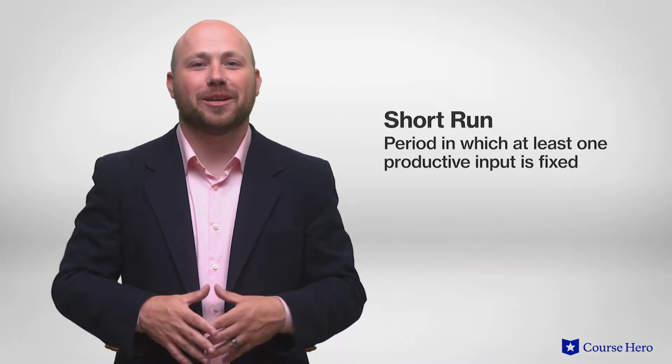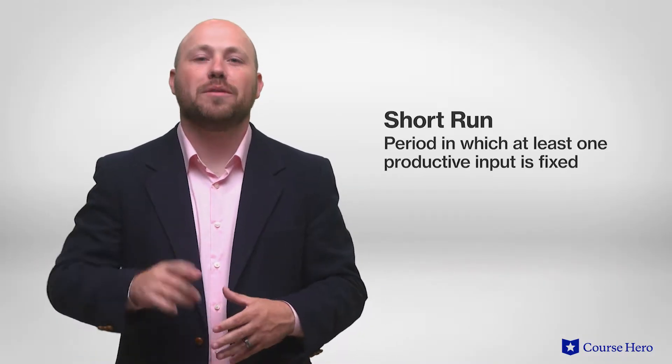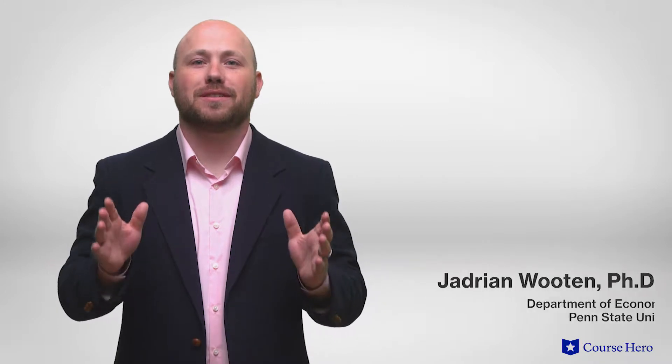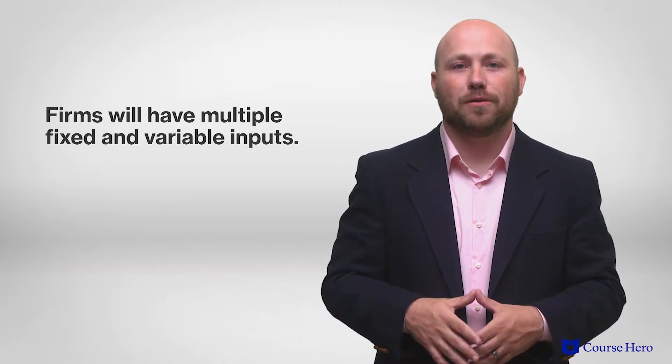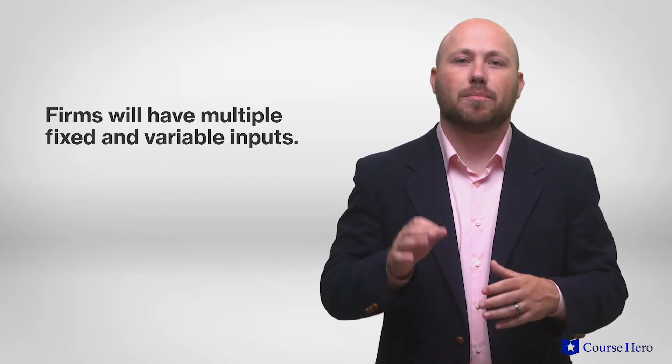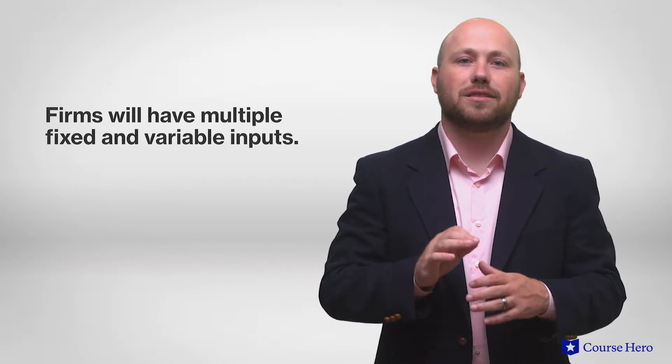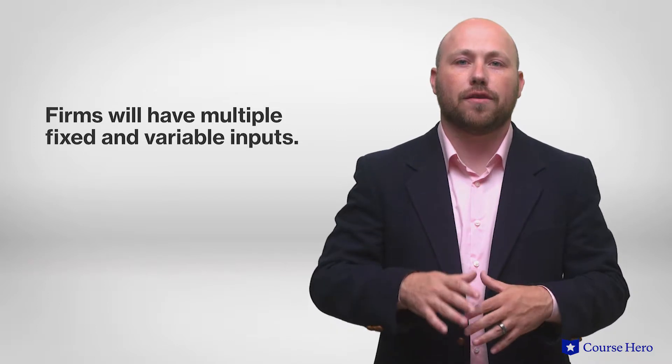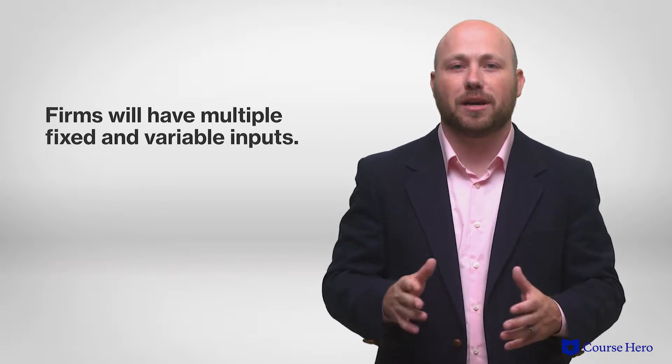The short run is the period in which at least one productive input is fixed. For simplicity, consider the size of a firm's capital stock as its fixed input and labor as its variable input, holding all other factors constant. In reality, firms will likely have multiple fixed and variable inputs, but the long run is the length of time it would take for all the firm's inputs to become variable.